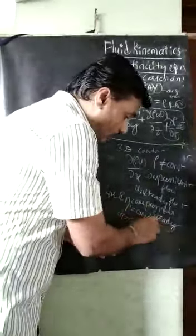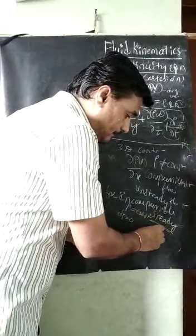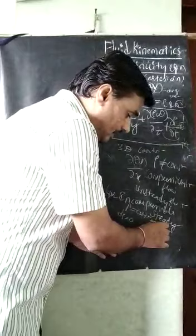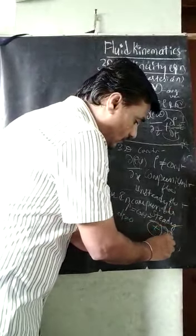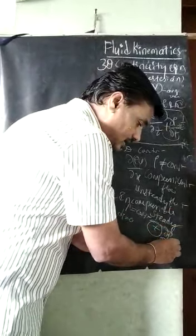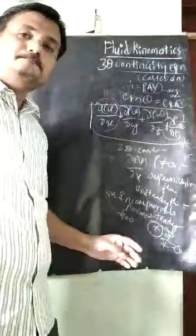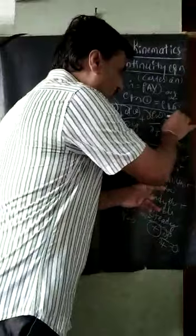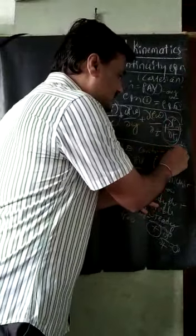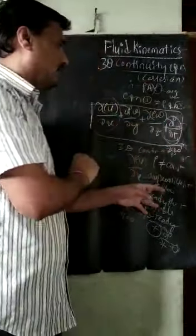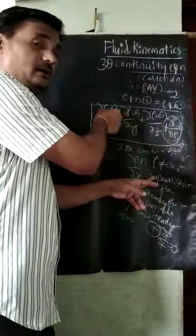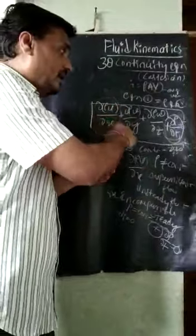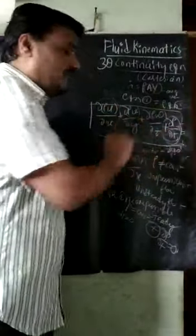For steady flow, with respect to time no parameters are changing, which means ∂ρ/∂t becomes 0. So the time-derivative term becomes 0 for steady flow. The density can then be taken outside the differential and the equation is equated to 0.